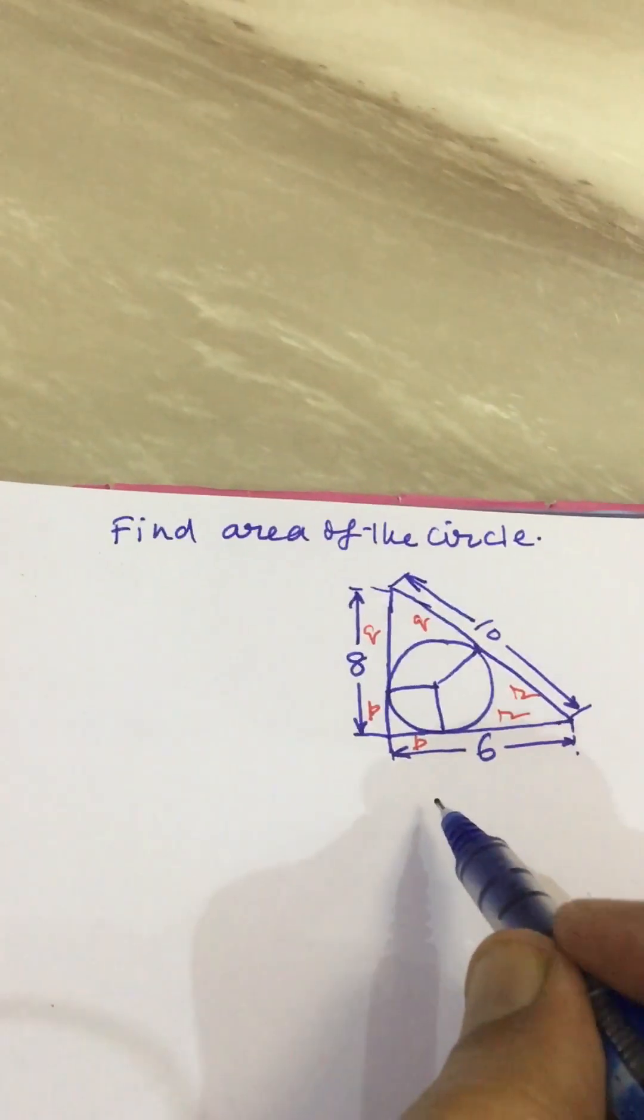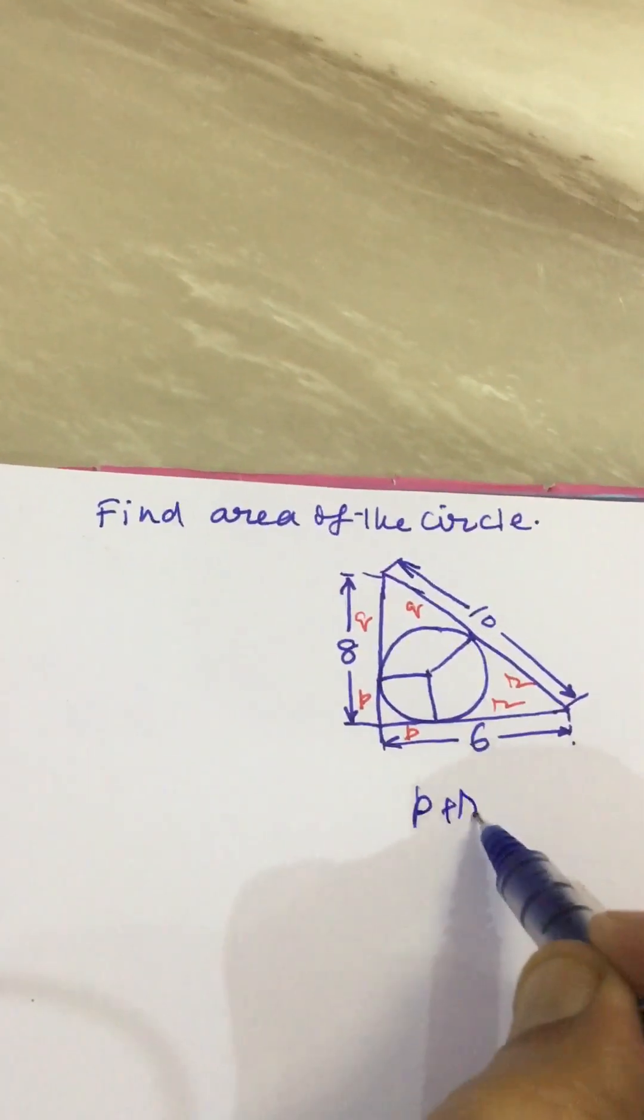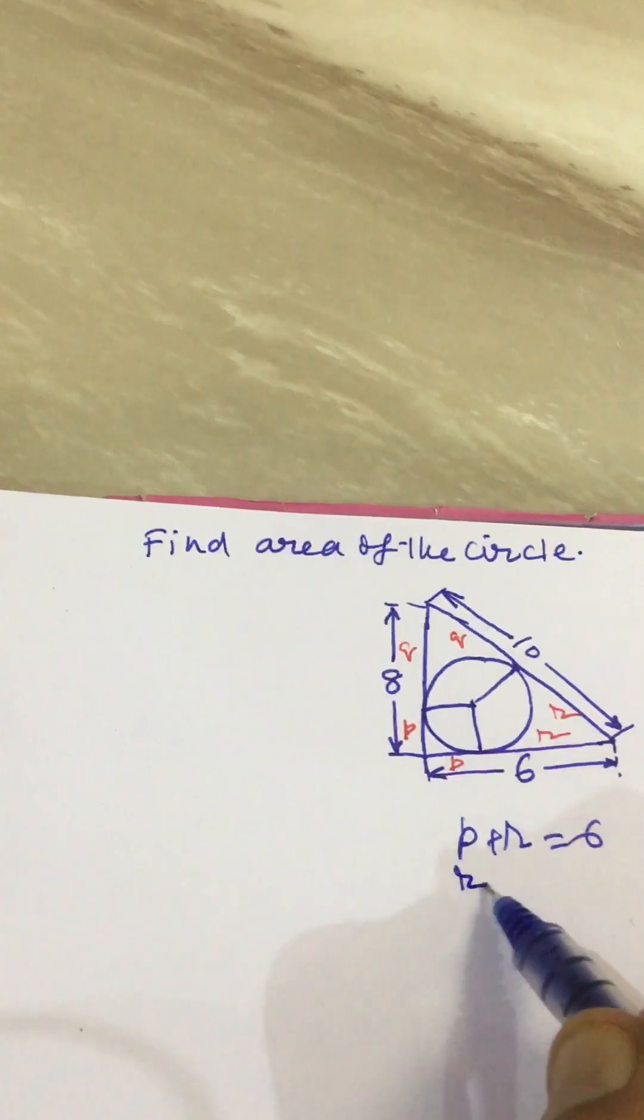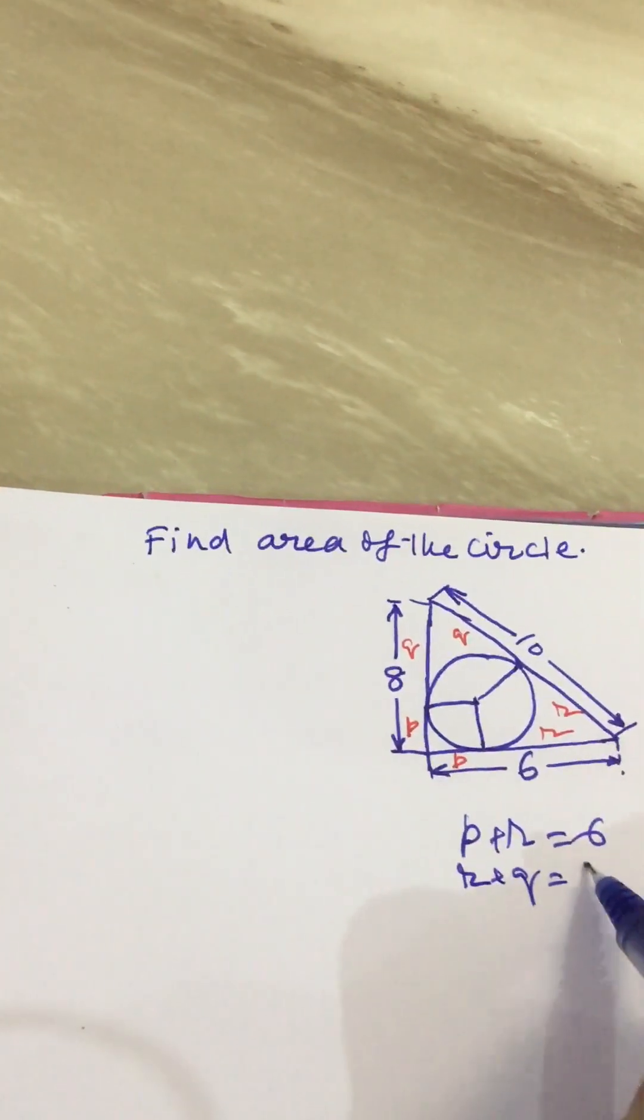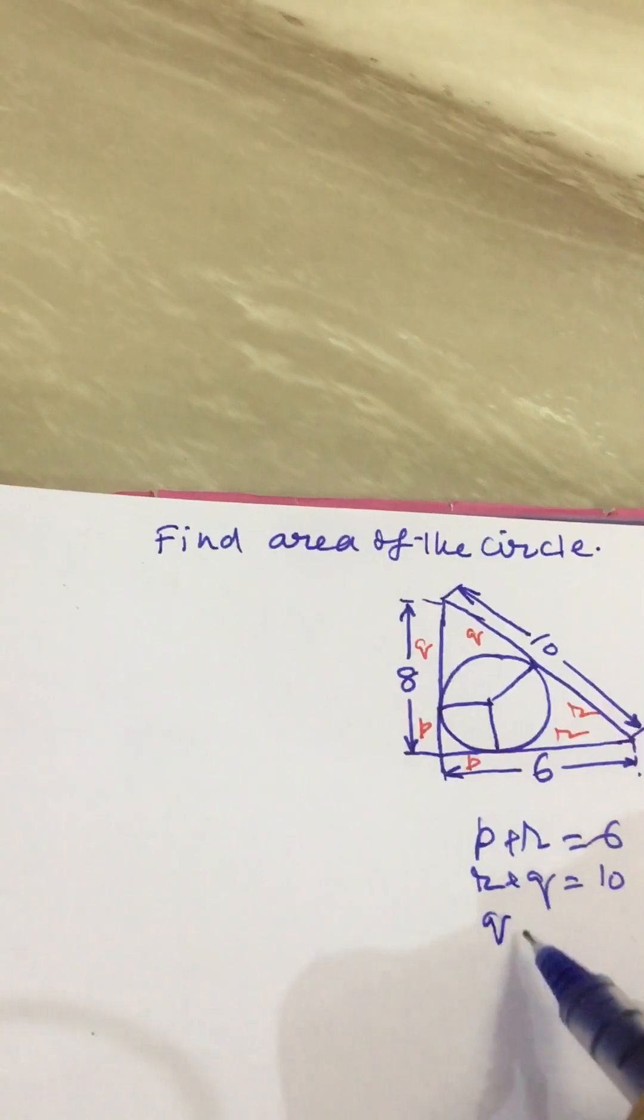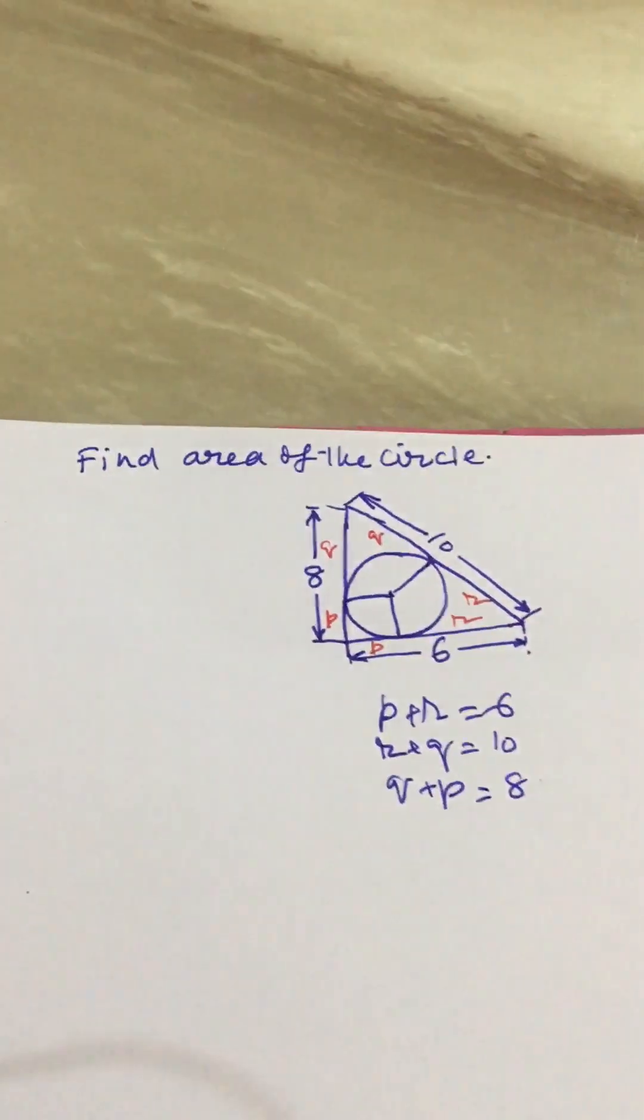From this we can write equations. P plus R should be equal to 6. R plus Q should be equal to 10. And Q plus P should be equal to 8.